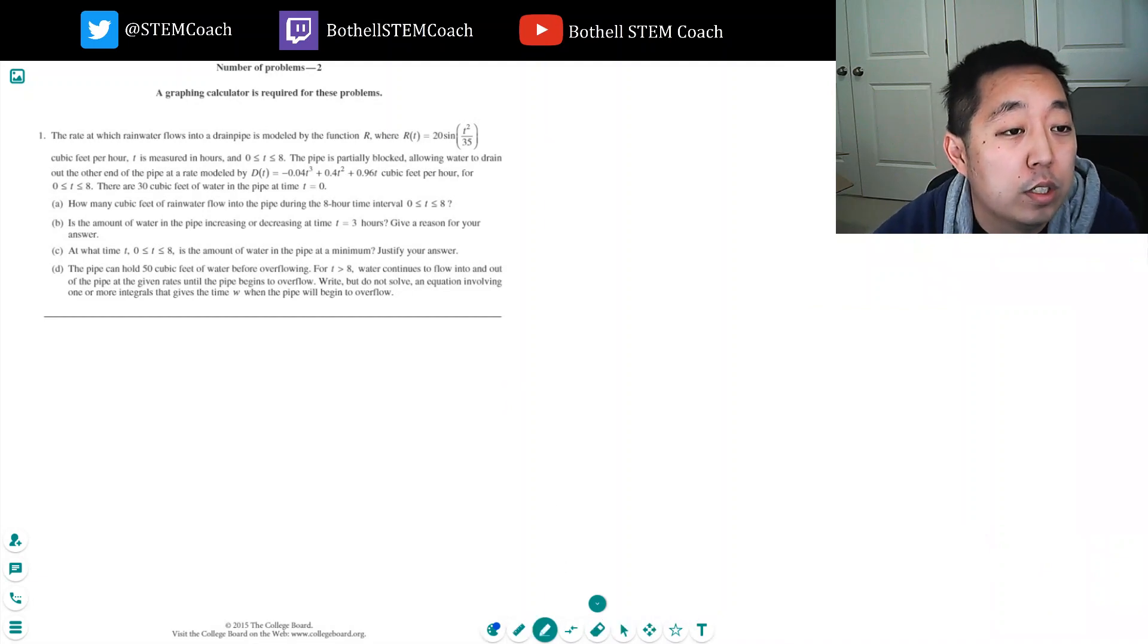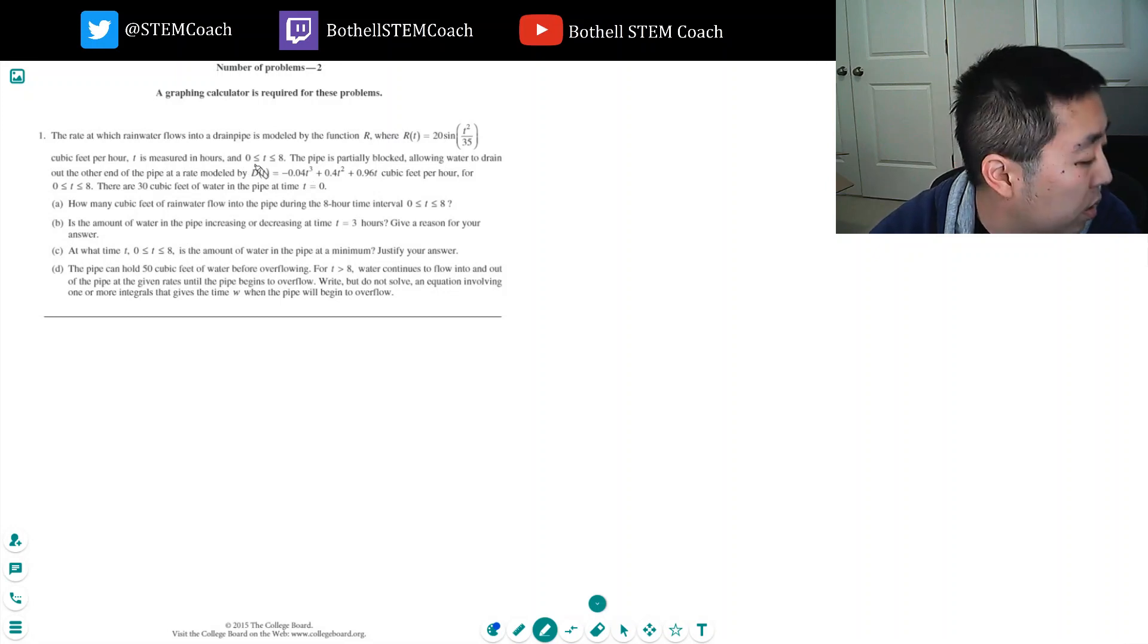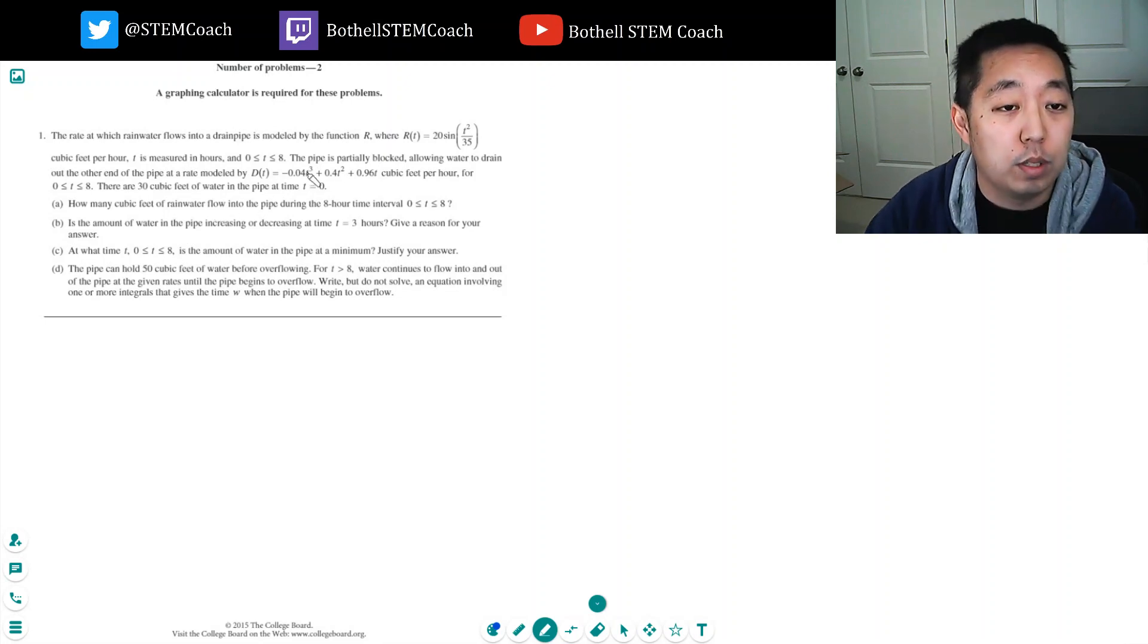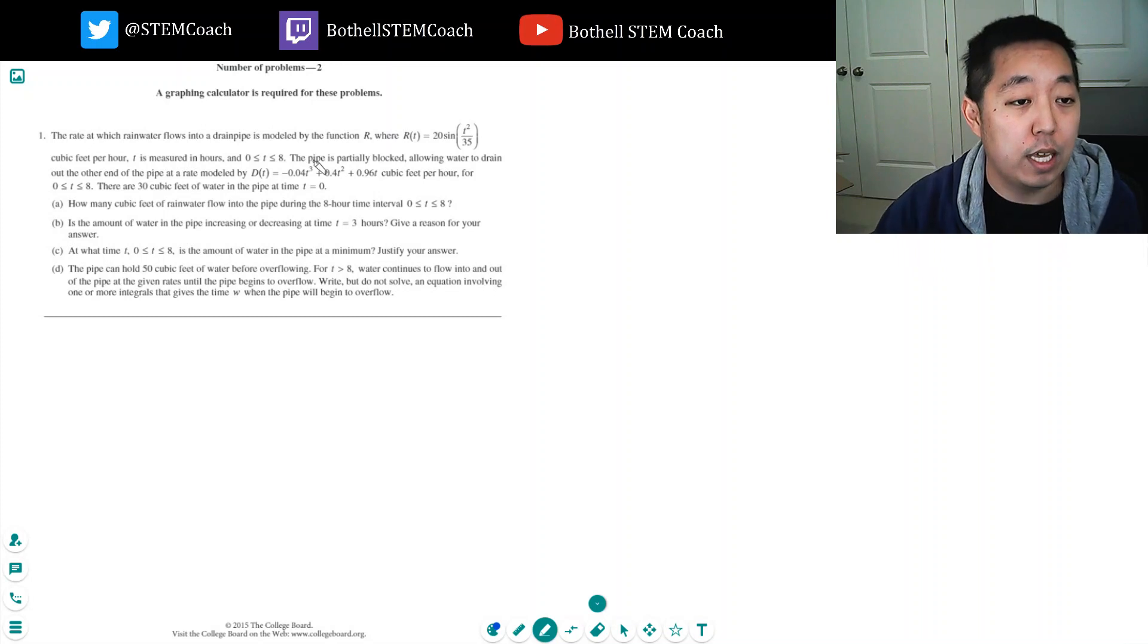Alright, so the rate at which rainwater flows into the drain pipe is modeled by this function in cubic feet per hour. T is measured in hours, and zero is less than or equal to T, less than or equal to eight. The pipe is partially blocked, allowing water to drain at the other end of the pipe at a rate modeled. So I got rain coming in, rain coming out. There are 30 cubic feet of water in the pipe at time T equals zero. How many cubic feet of rainwater flow into the pipe? So they want to know how much is flowing in.